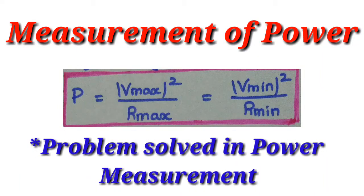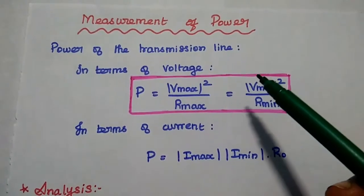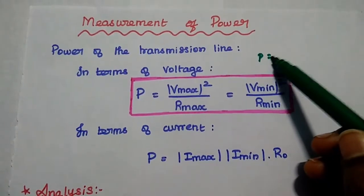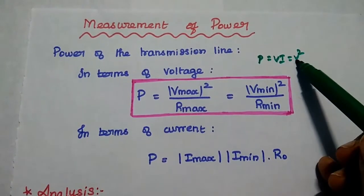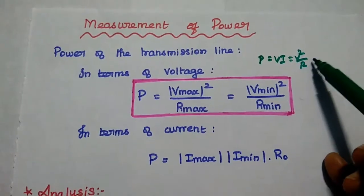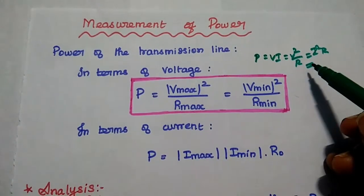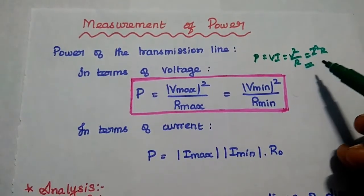Dear students, now we are going to discuss measurement of power in transmission line and solve a problem. In general, power can be measured using the formula P = V × I, which equals V² / R, and also equals I² × R. This is the general formula to measure power.